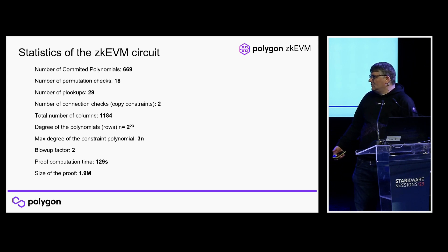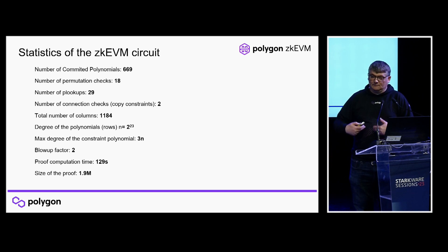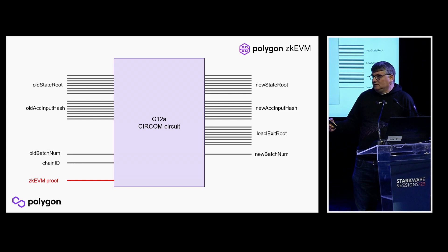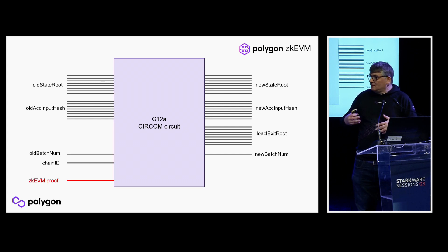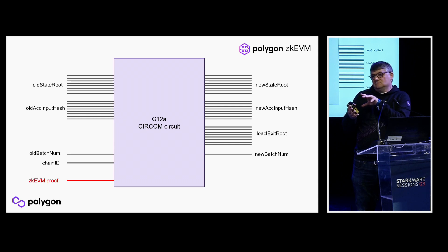We have this huge 2MB proof and we can't prove it on-chain, and it doesn't aggregate anything. So the first thing we do is reduce this proof — we create a first level of recursion with a single proof just to reduce it. The public inputs are exactly the same as the original circuit, but the input is now the last proof we generated (those 2 megabytes). This new circuit verifies the STARK, and is generated automatically in Circom via a tool that takes any PIL circuit and generates the verifier in Circom.